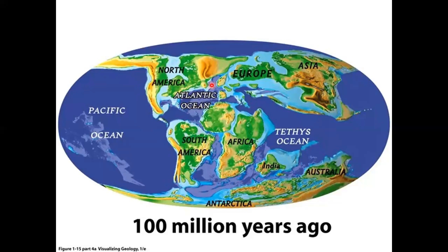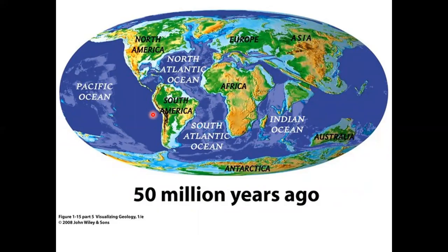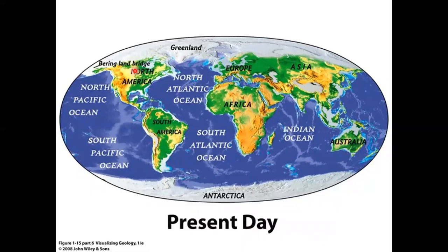At 50 million years ago, things are beginning to take shape, but still no California and still most of Texas isn't there. Florida is absent too. Then to modern day — our globe as it is today, but it's still changing. Things are on the move.